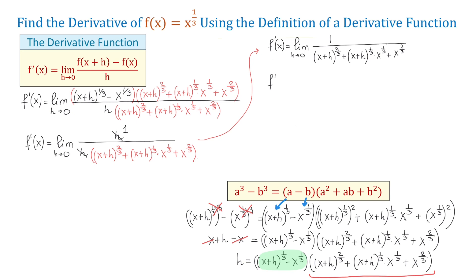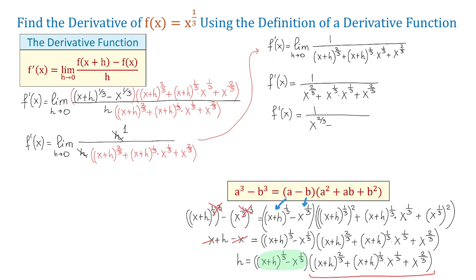Then f prime of x equals 1 over — x plus 0 is x — so we will have x to the two-thirds plus x to the one-third times another x to the one-third, plus x to the two-thirds. If we add those two exponents we will get x to the two-thirds. Then f prime of x equals 1 over x to the two-thirds plus x to the two-thirds plus x to the two-thirds, which equals 1 over 3x to the two-thirds. And this is the derivative of x to the one-third.